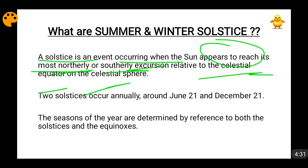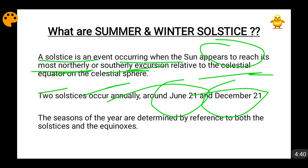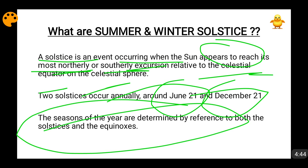The Sun will be above the Tropic of Cancer on June 21, and the Sun will be above the Tropic of Capricorn on December 21. The seasons will also depend upon the transition between these equinoxes and solstices, so the transition between equinoxes and solstice will also decide the seasons.